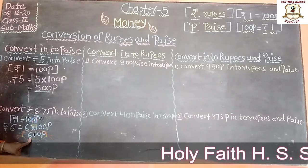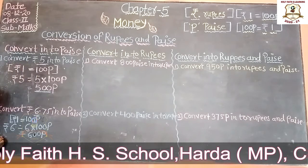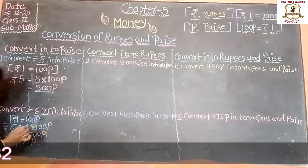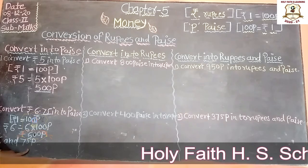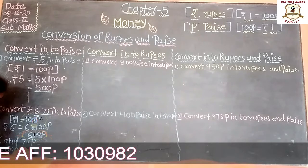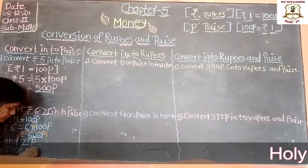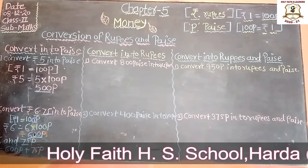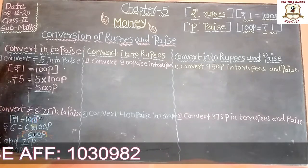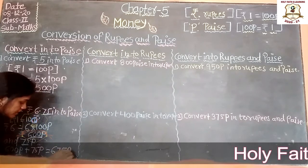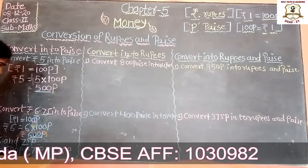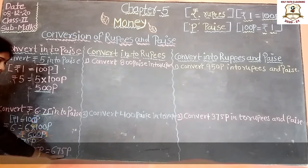So we have 600 paise. Rupees 6 and 75 paise. We add these together: 600 paise plus 75 paise is equal to 675 paise. So we add all the paise together and get 675 paise. Clear students?